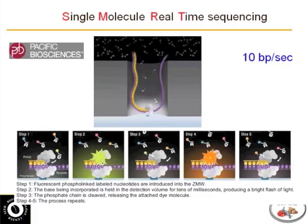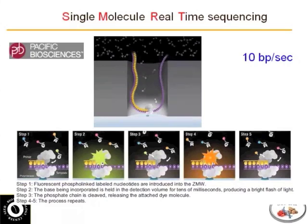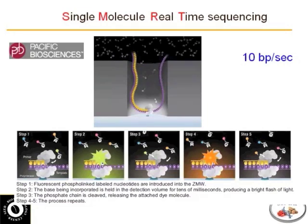A totally different type of sequencing is called single molecule real-time sequencing, from a company called Pacific Biosciences. This is a very unique approach in that they're using the natural DNA polymerase that actually sequences at what's called enzymatic speed. Next generation sequencing takes days or weeks to do a run. Pacific Biosciences does in about four hours what Illumina can do in about a week or two. The difference is they've added the fluorescent label not to the nucleotide but to the phosphate group, which is less intrusive, makes it a smaller molecule, and allows the polymerase to proceed much more efficiently.